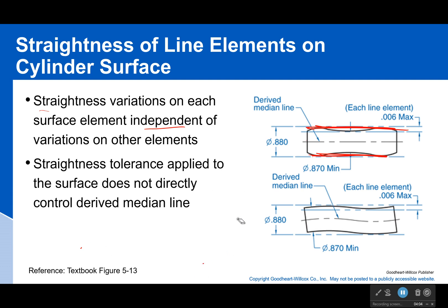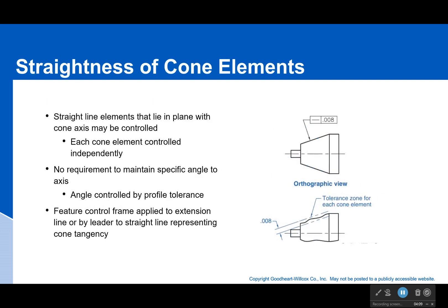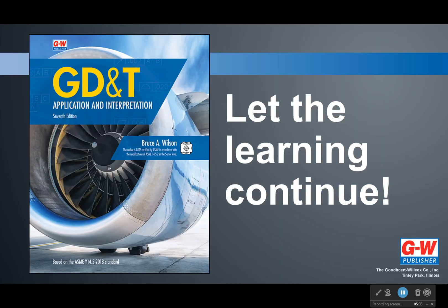Each line element gets its own tolerance and must pass with that tolerance independently. Interestingly, you don't typically use straightness on a cone. Just like the cylinder, it only makes sense in one direction — up the surface of the cone. However, this does not control the angle relative to the axis. A surface could be perfectly straight but have a horribly wrong angle, as shown here. You would have to control the angle with a profile tolerance. The feature control frame is applied to an extension line or leader line tangent to the cone surface. That's it for this time — see you next time as we continue learning about straightness tolerances.